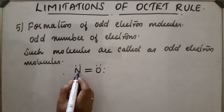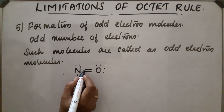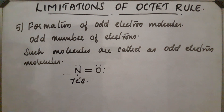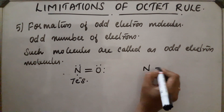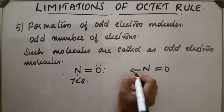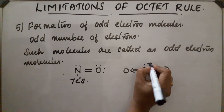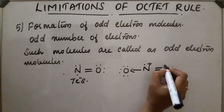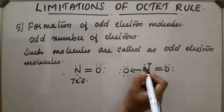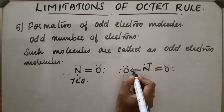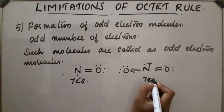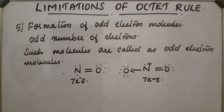In NO, the nitrogen atom contains 7 electrons in its outermost shell after bonding. In NO2, the nitrogen atom also contains 7 electrons in its outermost shell after bonding. So these molecules do not satisfy the octet rule.